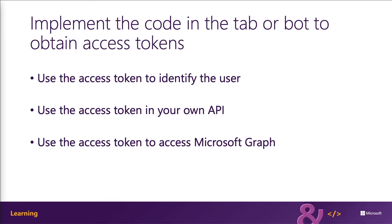If you use this access token in your own API, you should implement accepted best practices when forwarding this token received from Microsoft Teams. This includes validating the token to ensure it was created by Azure AD, it's from the expected authority, the app is the intended audience, the token hasn't expired, and the scope is set to access_as_user. In the scenario where your app needs to access Microsoft Graph, your code can use this token to start the OAuth 2.0 On-Behalf-Of Flow, otherwise known as the OBO Flow.